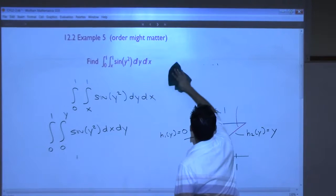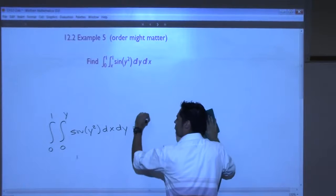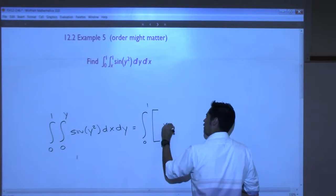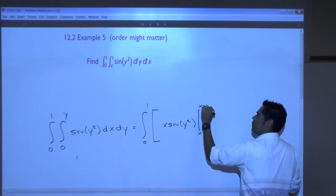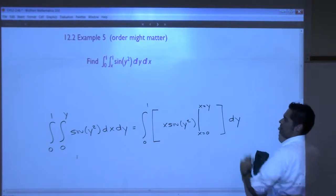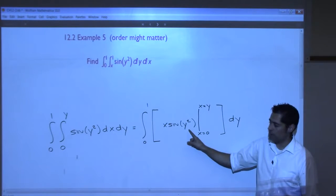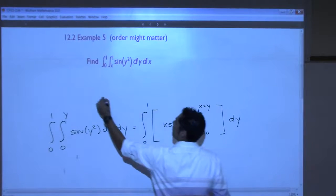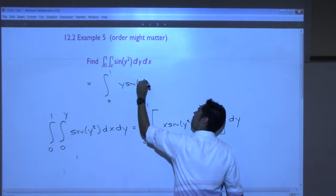All right, so let's do this integration. The anti-derivative of sine of y squared with respect to x is? X sine of y squared, right? Evaluating this, x equals 0 to x equals y, dy. Now I'm going to replace x with y, so this is going to become y sine y squared. Replace x with 0, and we're just going to get 0. So this will become integral 0 to 1, y sine y squared, dy.